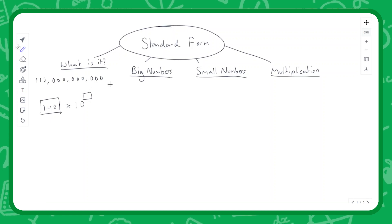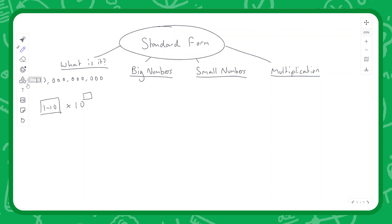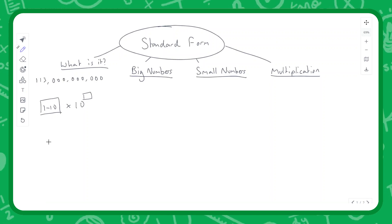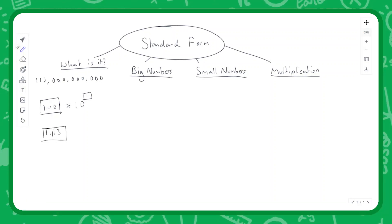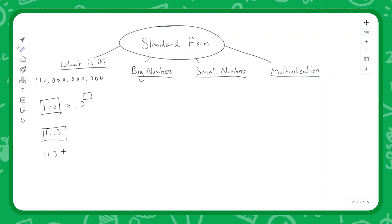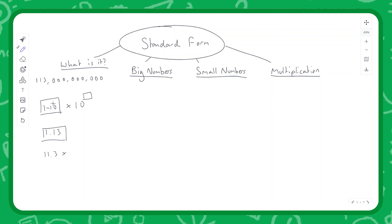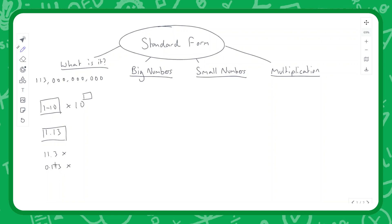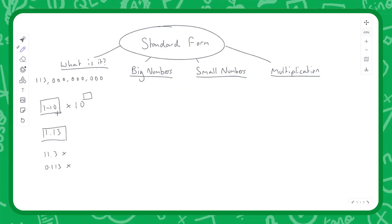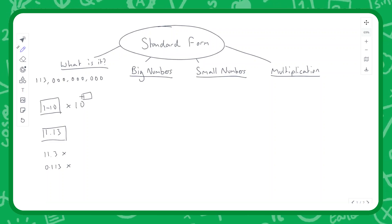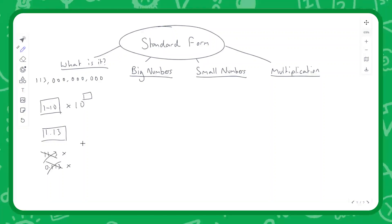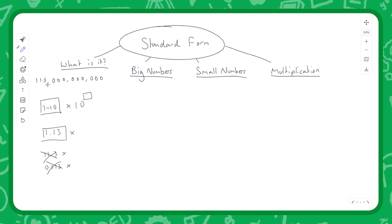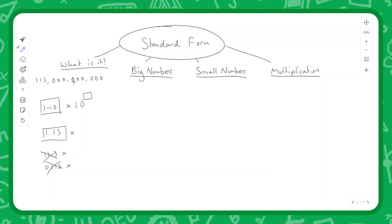Let's focus on this massive number. We need to first think of a number between one and ten that can represent our digits. In this case it's going to be 1.13. If we tried 11.3, that's bigger than 10 so it's not between one and ten. If we tried 0.113, that's also not between one and ten. So the correct base value is 1.13, and now we work out the scale factor - how much do we need to multiply 1.13 by to convert it into 113 billion.